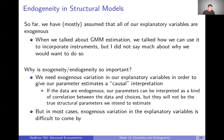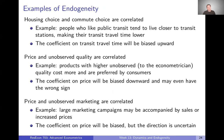The problem is that in most cases, real exogenous variation in important explanatory variables is often difficult to come by. For example, housing choice and commuting choice are typically correlated. People who like public transit tend to live closer to transit stations, making their transit travel time lower — but that's endogenously lower because they like transit. So we'll see people who like transit have lower transit times, which will bias upward any coefficient on transit travel time, making it look like transit travel time is really important to their decision, when in reality their decision affected the transit travel time and not the opposite.